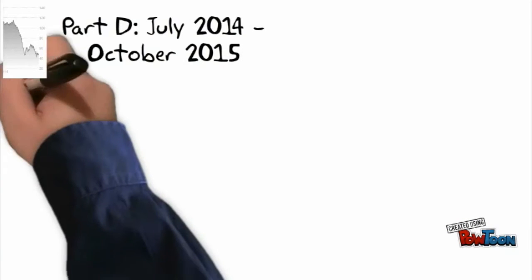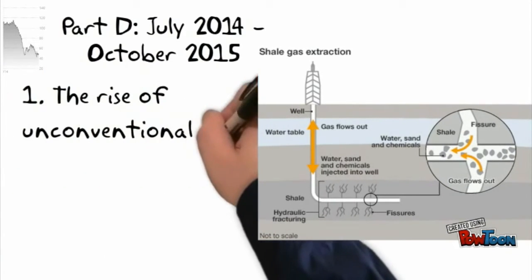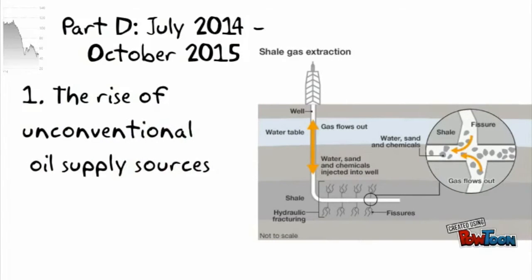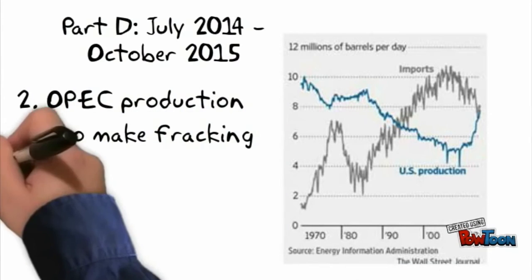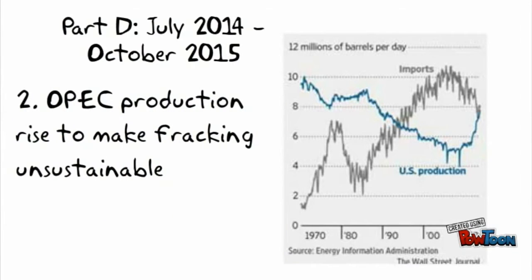Part D: The second shock of the decade can be explained by the following factors. Firstly, the world saw a rise in unconventional oil supply sources such as fracking. This is a process by which shale oil located in between rock formations is extracted by pumping water, chemicals, and sand at high pressure to break the rock structures and extract the oil. This technique proliferated in the USA until 2014, when OPEC and mainly Saudi Arabia decided to massively produce oil so as to bring the price down and eventually make fracking, which had a higher marginal cost, unsustainable.